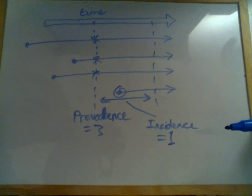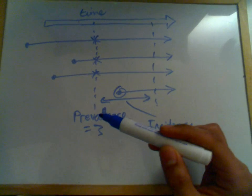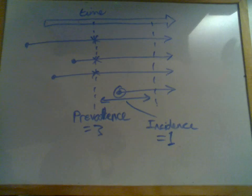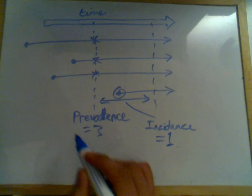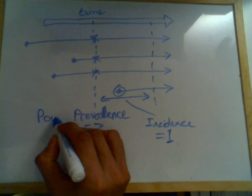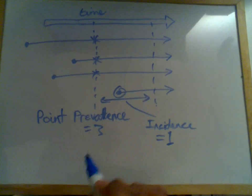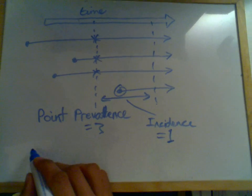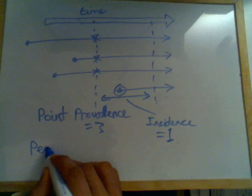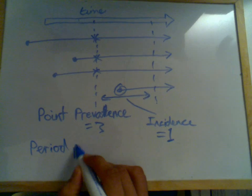Now there are different types of prevalence and different types of incidence. And I'm just going to explain them now. This type of prevalence, what we're looking at, is actually called point prevalence. It's prevalence at a single point in time.